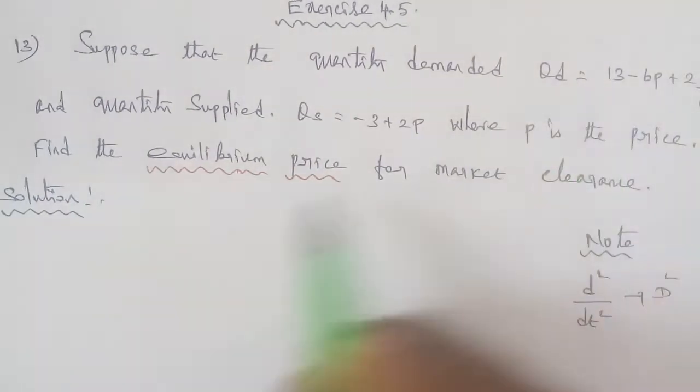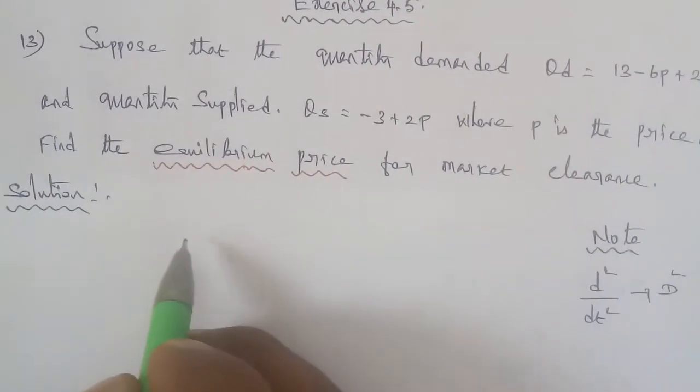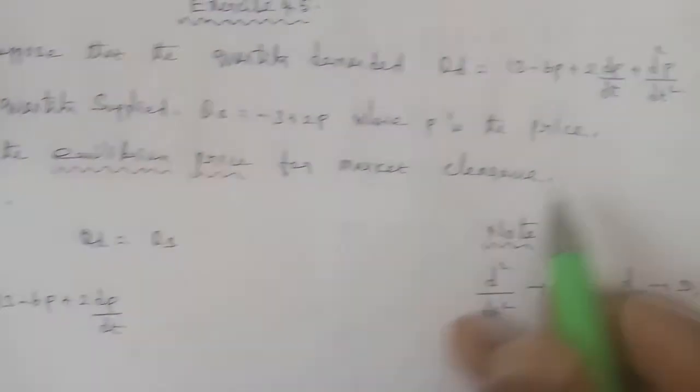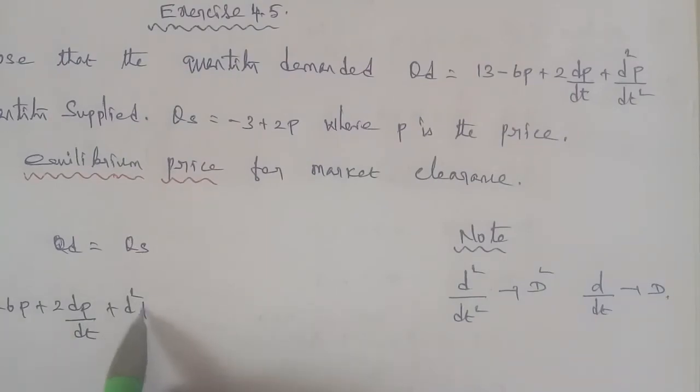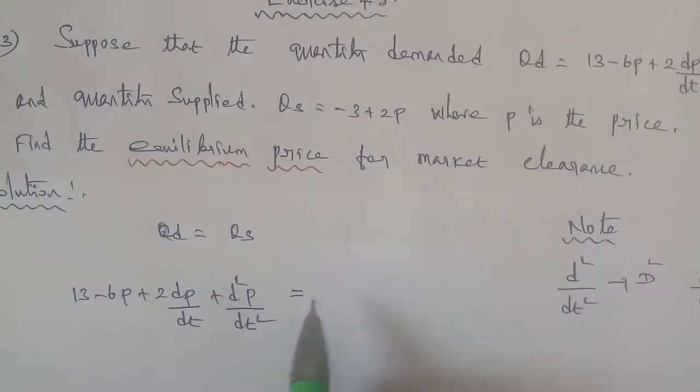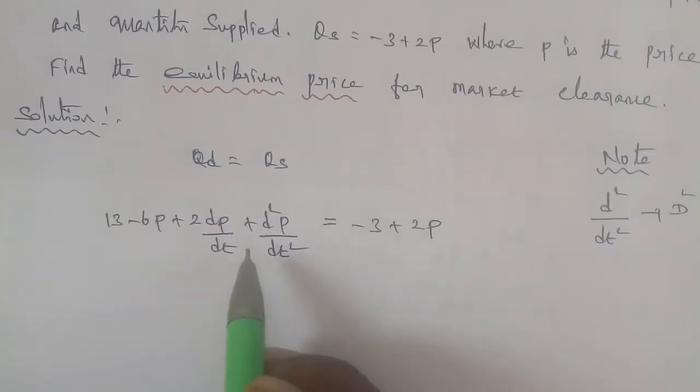For equilibrium, price Qd equal to Qs. So we have 13 minus 6p plus 2 times dp/dt plus d²p/dt² equal to minus 3 plus 2p.